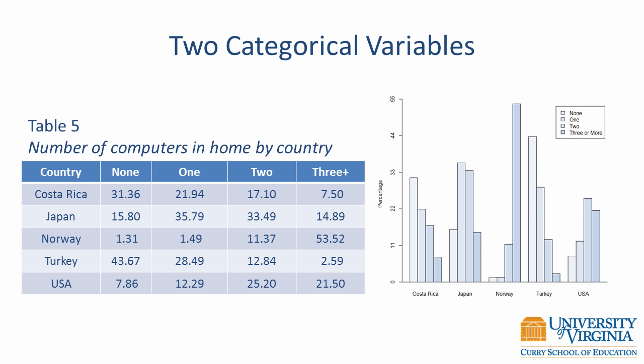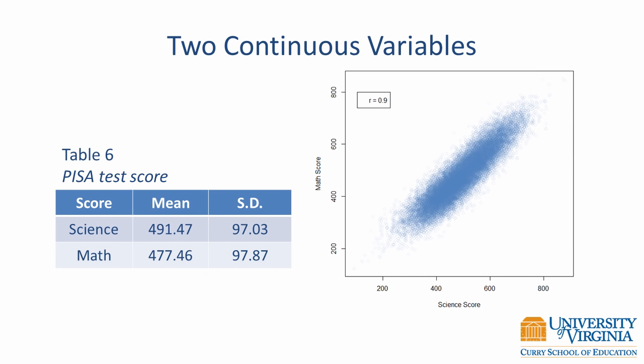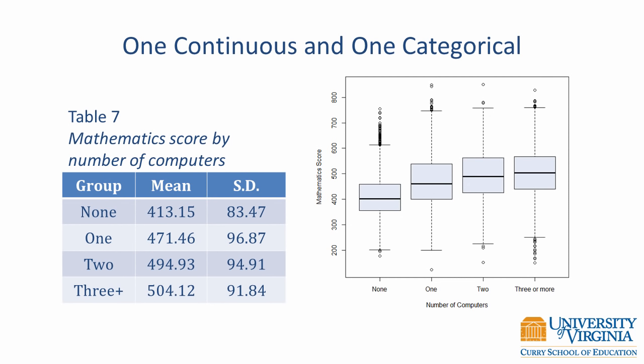A conditional bar chart shows a bar chart for one variable at each value of the other variable. For two continuous variables, we can present descriptive statistics for each variable or describe the relationship with a correlation, illustrated with a scatter plot. Less obvious is the relationship between one continuous and one categorical variable: a side-by-side box plot shows a box plot of the continuous variable at each value of the categorical variable. This figure shows that as the number of computers increases, so too do mathematics scores.